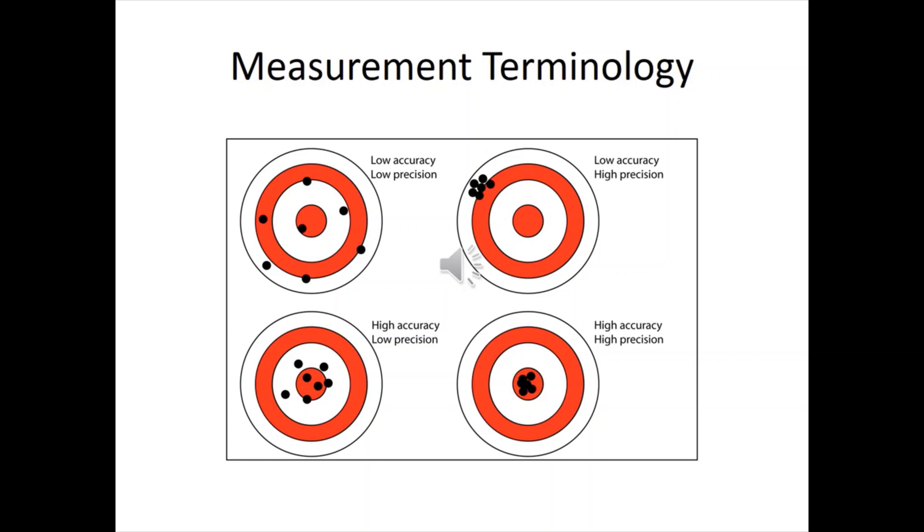And then the upper right-hand, you've got low accuracy, high precision. This means you've got a lot of bullets hitting in the same spot. They're just not hitting in the right spot.